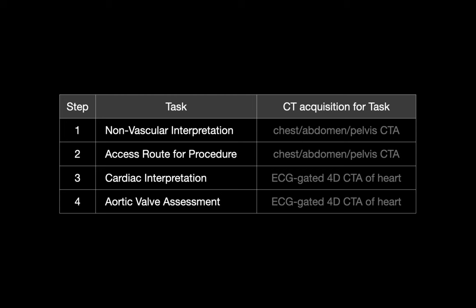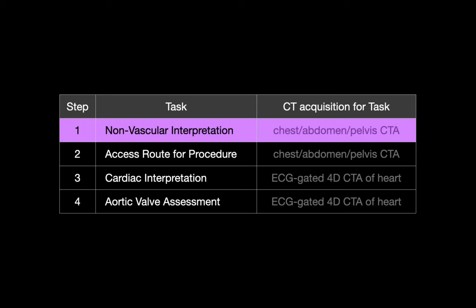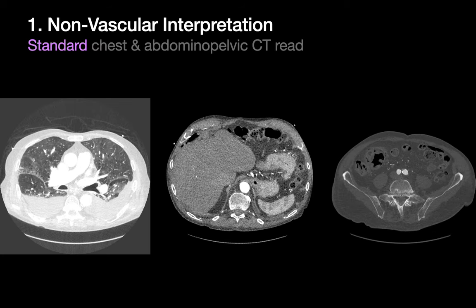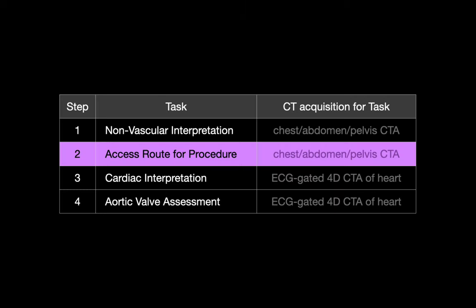Your interpretation of a TAVR planning CT study begins with a standard non-vascular read of the patient's chest and abdominal pelvic CT — tasks like counting lung nodules, checking out the liver, looking for bone lesions, and so on. Once you've completed a standard non-vascular read of the chest and abdomen, you're ready to begin assessing the intended access route for the patient's TAVR procedure.